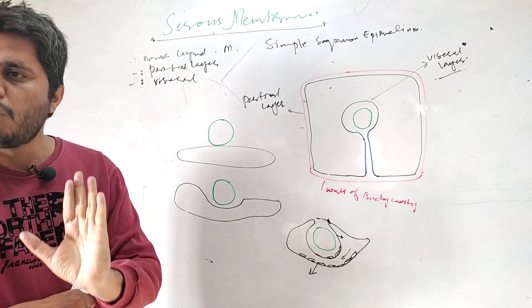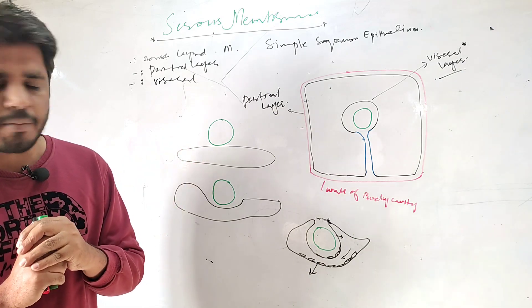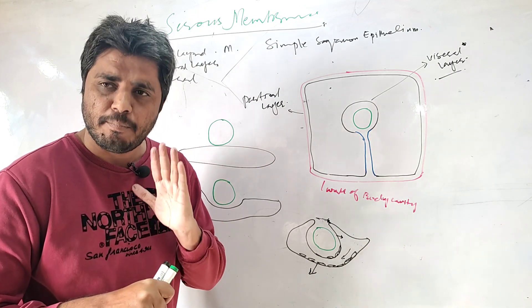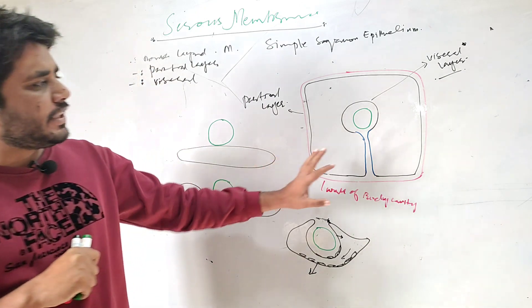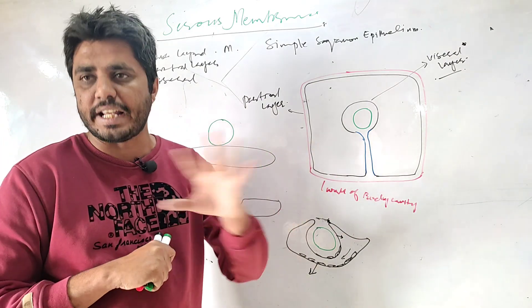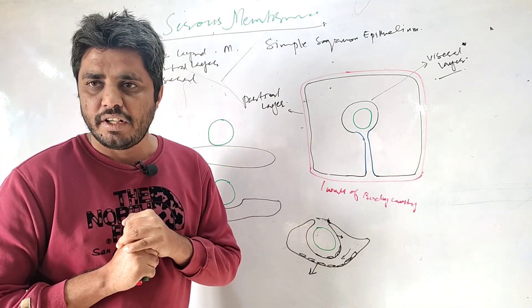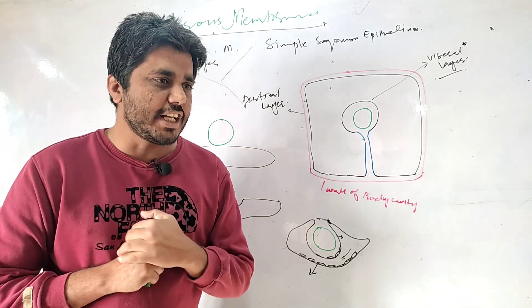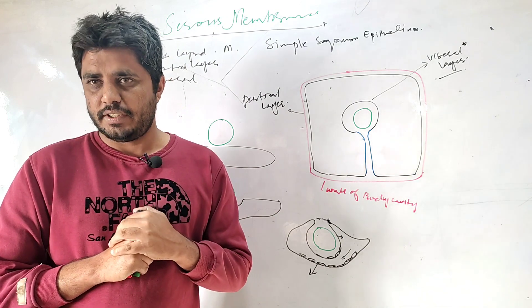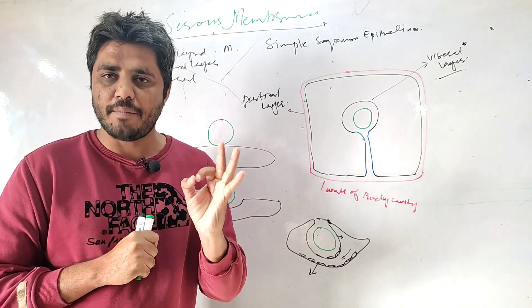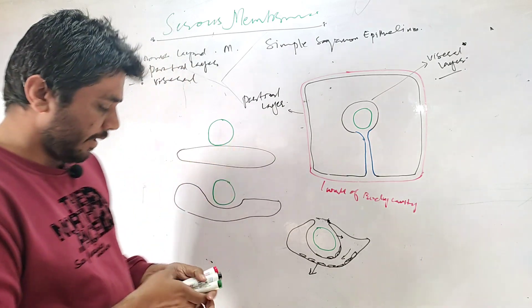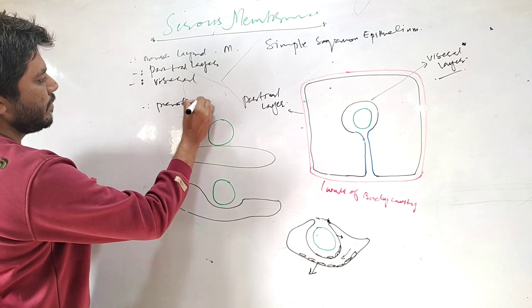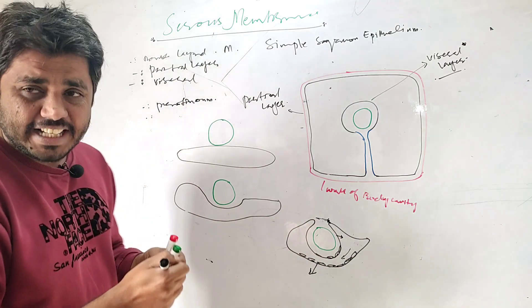We have two major body cavities in our bodies which we give a lot of focus: one is the thoracic body cavity and the other is the abdominal pelvic cavity. This membrane has different names in different areas. The serous membrane which lines the abdominal cavity is known as peritoneum.